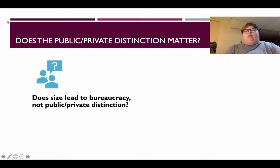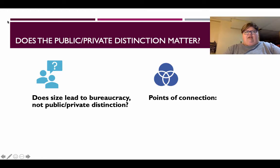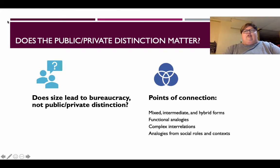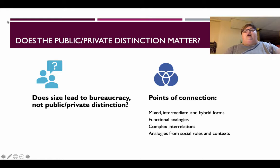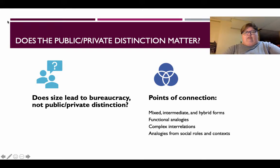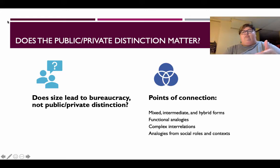One of our main focal points today is the points of connection between public and private enterprises. The book chapter from Rainey does a good job talking about hybrid forms, functional analogies, and complex interrelations. We'll give two main examples where these points of connection really matter in a public-private context — whether bureaucracy comes out of that, whether a slowness to move results, or whether the problem was solved because of public intervention.